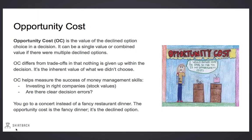Opportunity cost is the value of the option you did not choose in a decision. It can be a single value or the combined value if there are multiple declined options. In the screenshot to the right, we have a drawing from one of our students — it's a good example of opportunity cost. In the drawing, the girl has a choice between a television or an iPod. She decides she'd rather have the iPod, so the opportunity cost is the television.